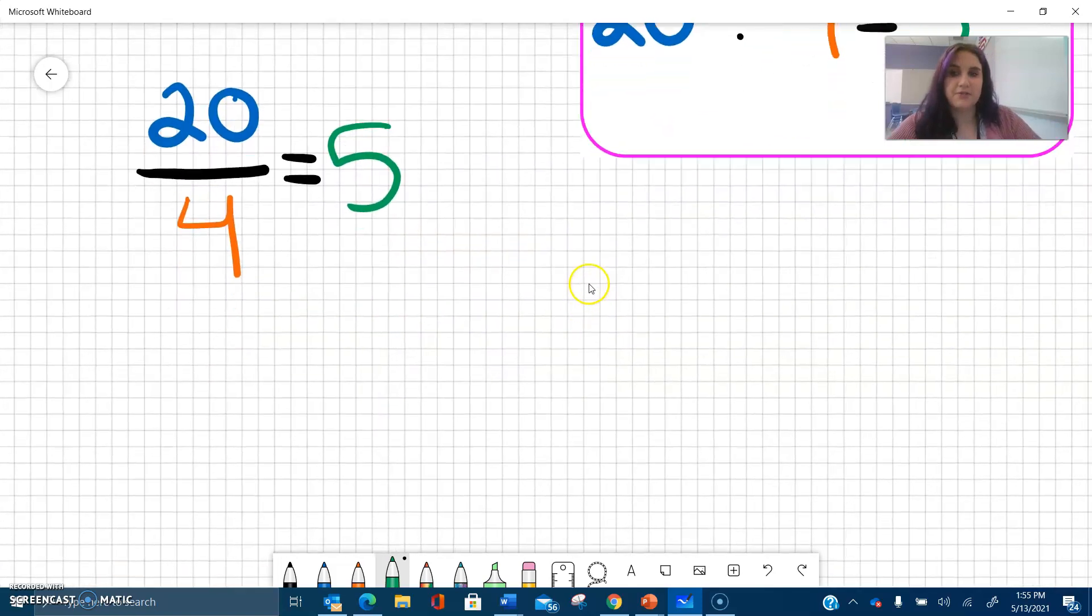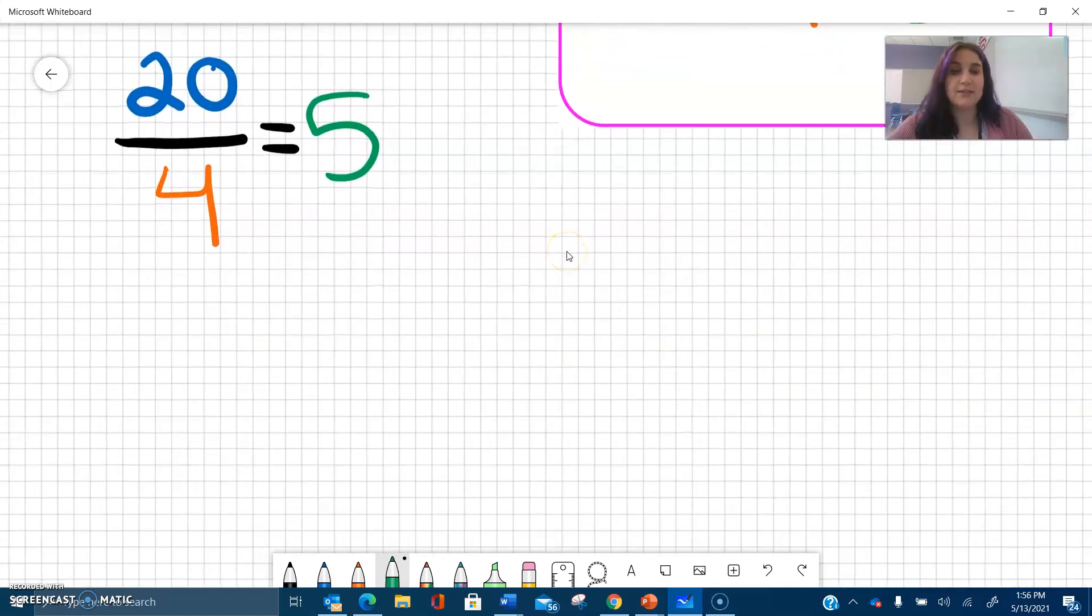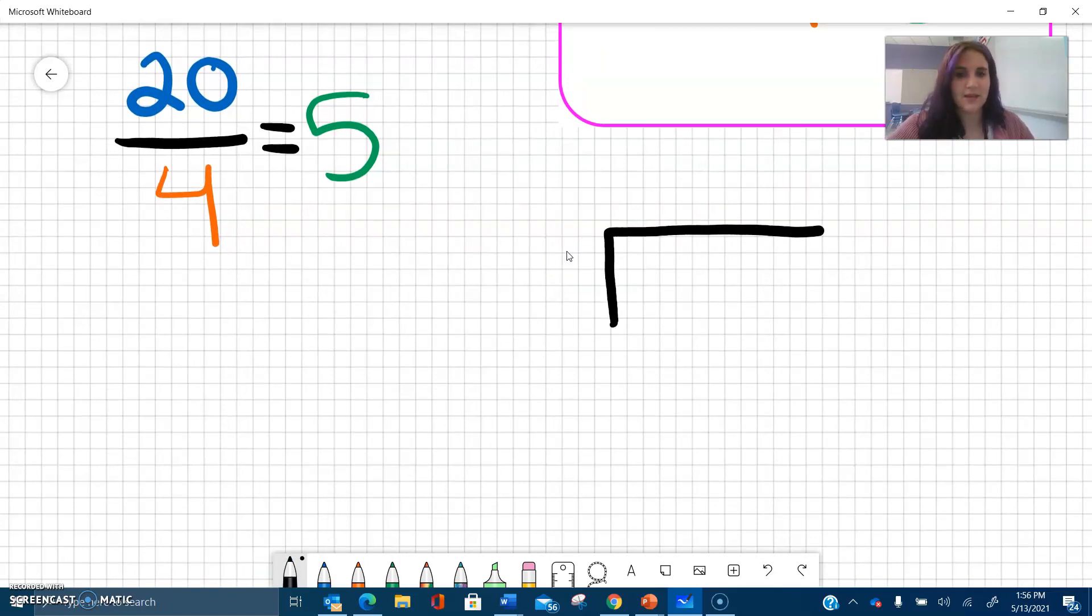Another way that we see division written is with a division box. And that looks like this. On the inside of the box, you put the dividend. So you put it inside. And what we are dividing by goes next to it, but on the outside. So 20 divided by 4. And then the answer or the quotient goes on top. So 20 divided by 4 equals 5. All of these different ways are said the same way.